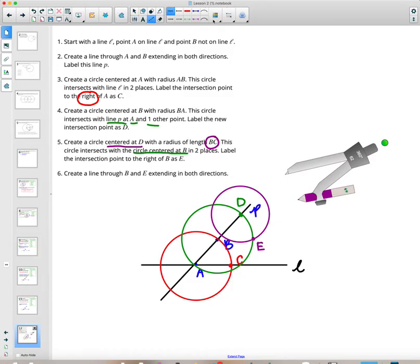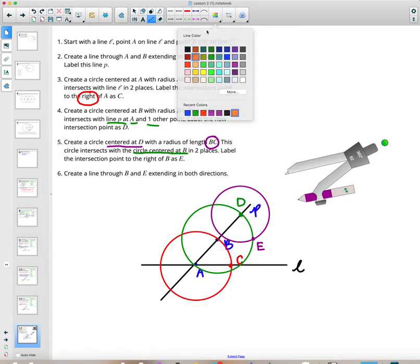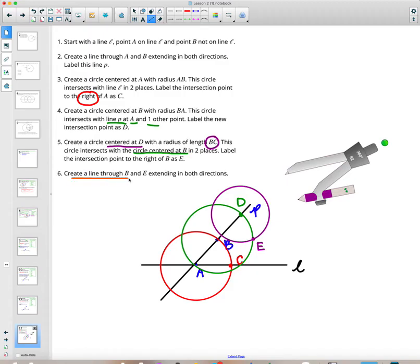Now, create a line. Create a line through B and E. Here's B. Here's E. Create a line that extends through those. Remember, line extends forever. Not just the segment connecting B and E, but a line. Lay your straight edge down. Draw a line.